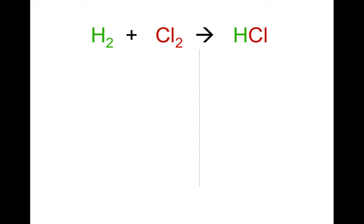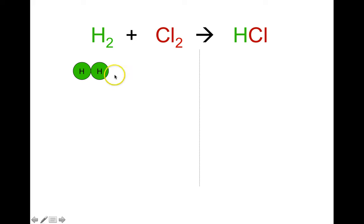There's a problem with the way this equation is written. H subscript 2 means that you have two hydrogen atoms bonded to each other, so that's what's drawn here — two hydrogen atoms touching because they're bonded together. Over here, Cl2 means we need two chlorine atoms bonded together. Notice the colors match.